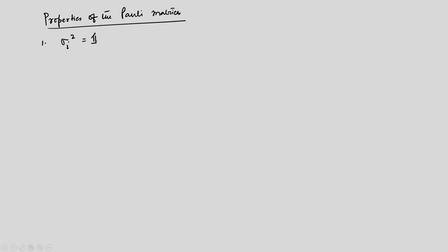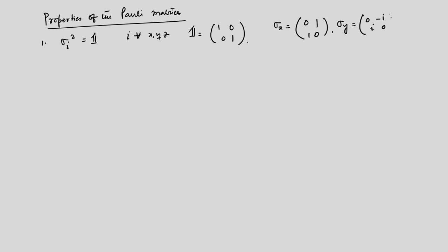The Pauli matrices have very interesting properties. One property is that the square of each is equal to the identity matrix: σ_i² = I for i = x, y, z, where I is the 2×2 identity matrix [[1,0],[0,1]]. The explicit forms are: σ_x = [[0,1],[1,0]], σ_y = [[0,−i],[i,0]], and σ_z = [[1,0],[0,−1]].